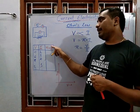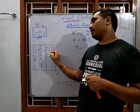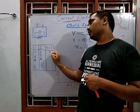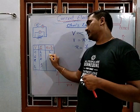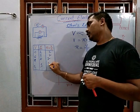Overall, if we calculate V by I: 4 divided by 2 is 2, 6 by 3 is 2, and 2 by 1 is also 2 — showing that R = V/I is always constant.